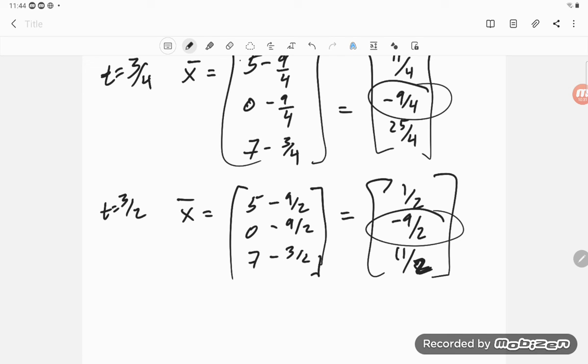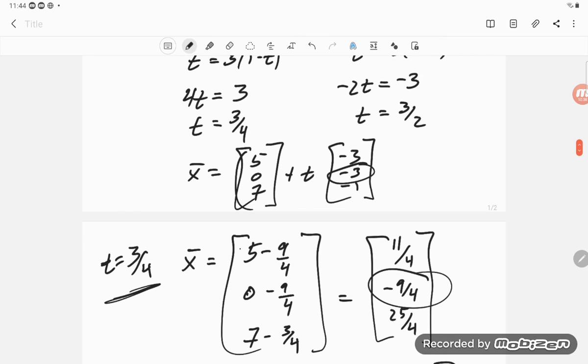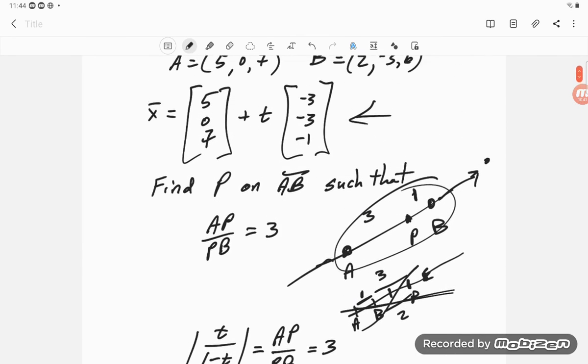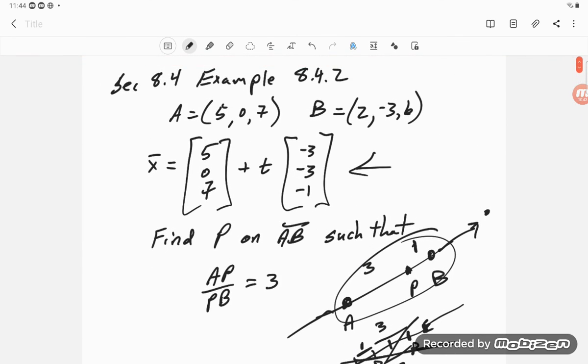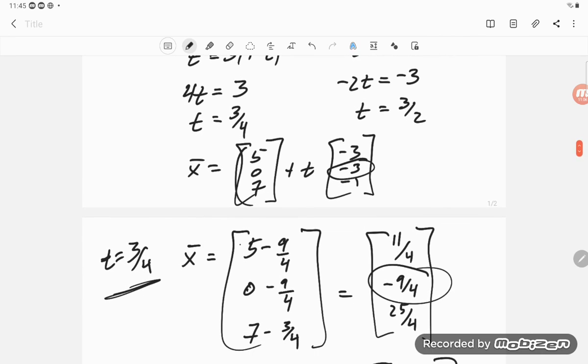But remember, in particular, this t here gives us a point in between points A and B. Okay. Well, so a point in between A and B would need to have that middle component negative. Because that's negative, that's zero. So I'm pretty darn sure we've got this right, right here.